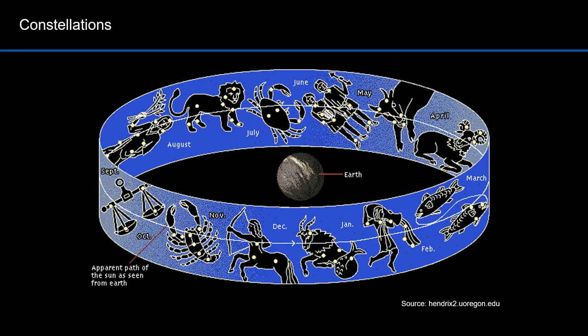Star patterns in the constellations were associated with shapes like a fish for Pisces, a hunter for Orion, or a crab for cancer. In 1922, Henry Norris Russell helped the International Astronomical Union in organizing the celestial sphere into 88 official constellations that account for every star.